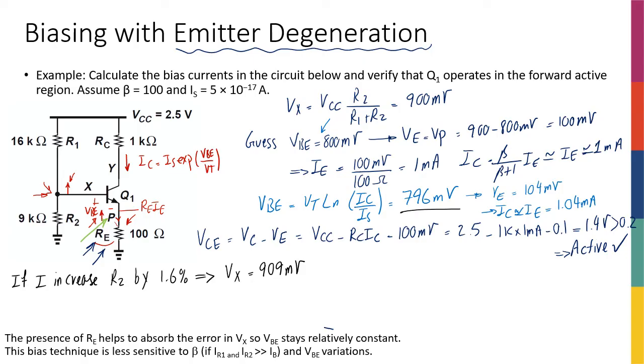Assuming that my VBE is going to be constant at that 800 millivolts that I have, because I'm assuming that the current IC is not changing, therefore VBE is not changing, all of this 9 millivolts is going to appear on top of the RE. So this means that my VP or VE, the emitter voltage, is going to go up by 9 millivolts, so it's going to be 109 millivolts. Therefore, my IE is going to be increasing from 1 milliamp to 1.09 milliamps.